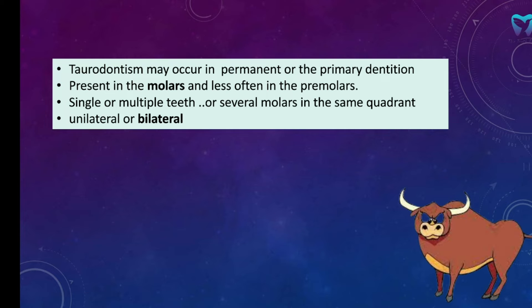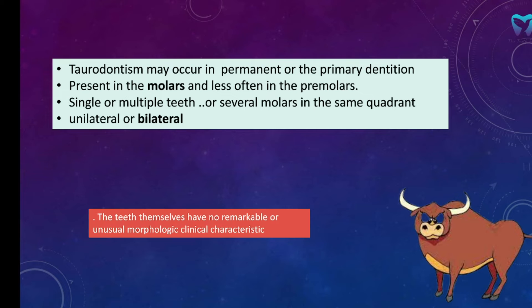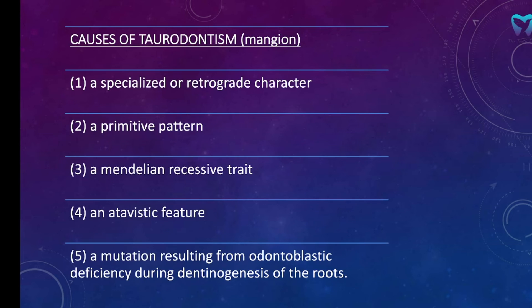Bilateral is more common. You are going to see a bull in all slides just to remind you that we are talking about bull teeth — taurodontism is bull teeth. The teeth themselves have no remarkable or unusual morphologic clinical characteristics, so we view it radiographically.